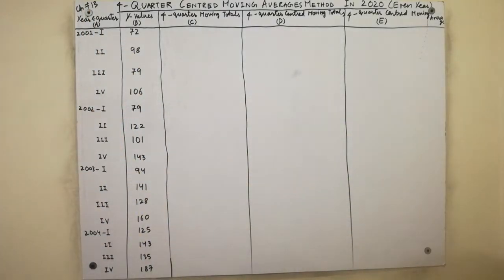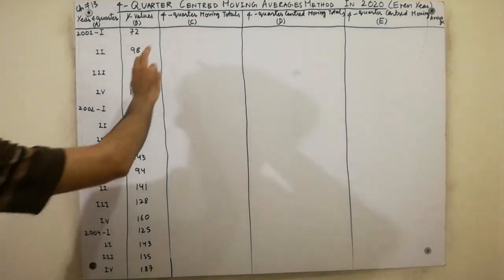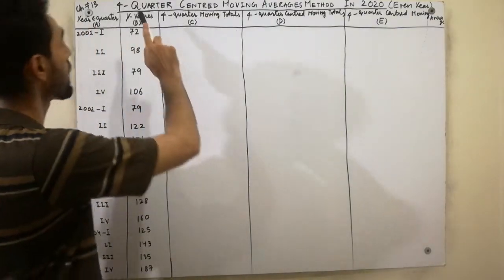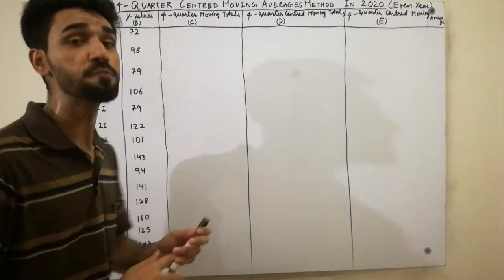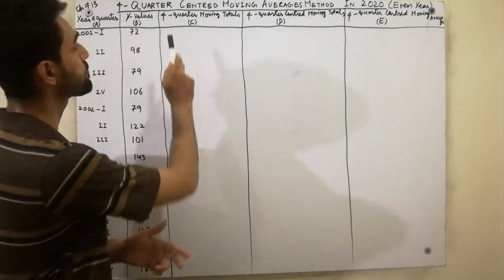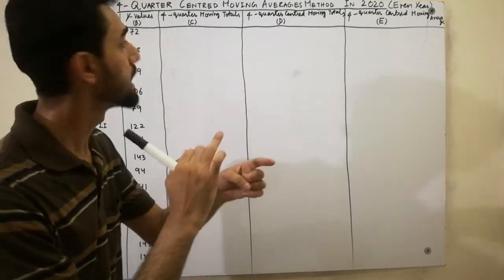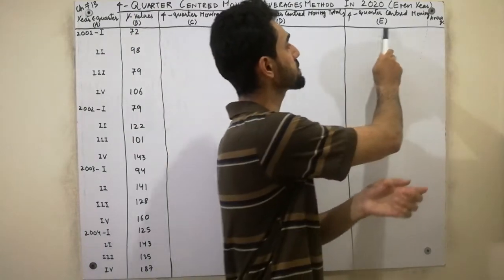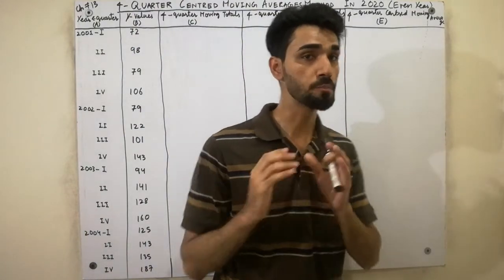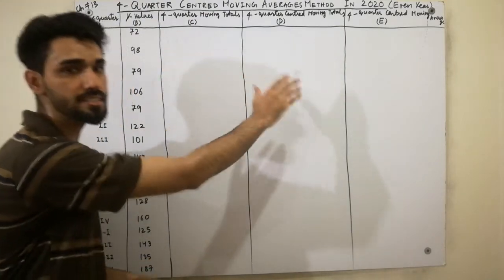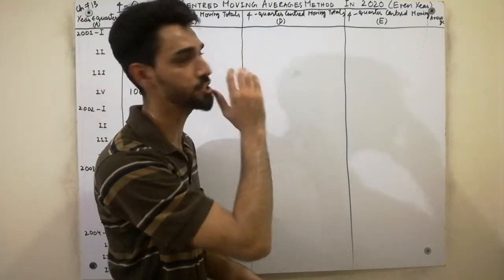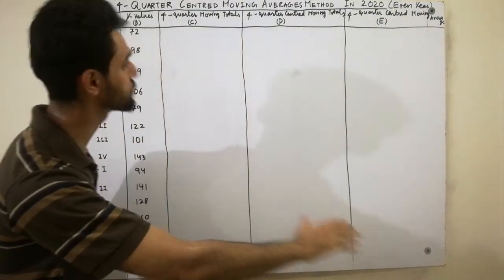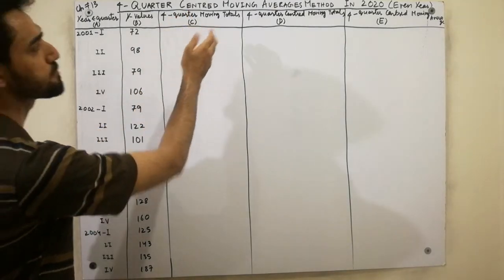Now, we have to calculate the Four Quarter Moving Total. Remember three key points: number one, we calculate the Four Quarter Moving Total; number two, we calculate the Four Quarters Centered Moving Total; and number three, the Four Quarters Centered Moving Average. These three key points are very necessary to complete the question.